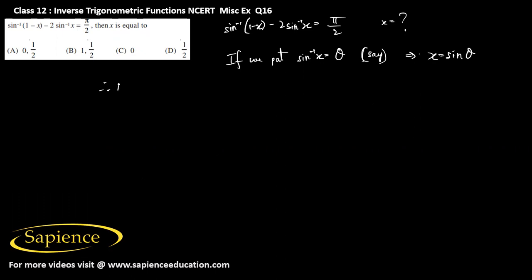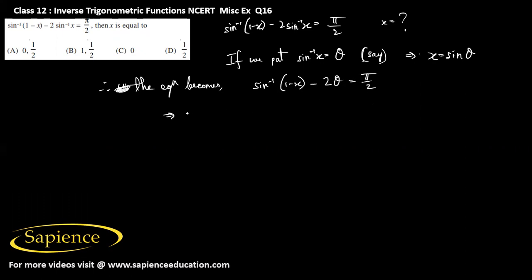Therefore the left hand side of the equation becomes: sine inverse of (1 minus x) minus 2 theta equals pi by 2. From here we can write sine inverse of (1 minus x) equals pi by 2 plus 2 theta.